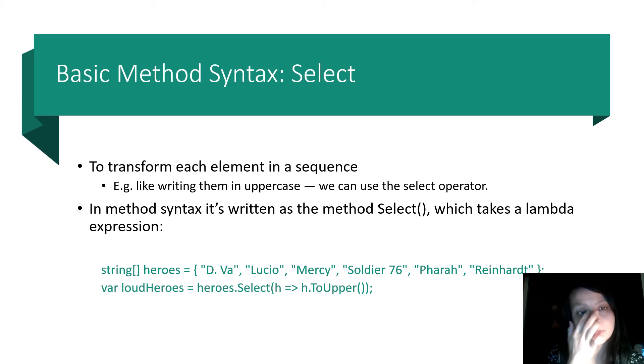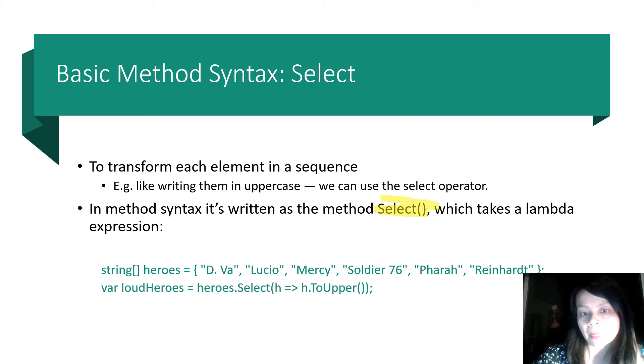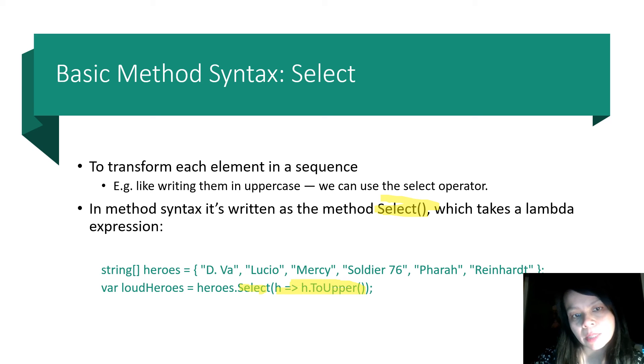So to transform each element in the sequence, like writing them in uppercase or lowercase, you can use the select operator. In method syntax is written as the method select, which takes a lambda expression. So select, and then here's your lambda expression: h.ToUpper.